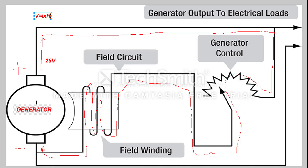If we assume that we have some sort of voltage being produced by the DC generator, that voltage is creating current moving through the variable resistor. A coil's resistance is basically going to be zero because it's just a coil of wire. So let's assume that the variable resistor is set to a resistance of 28 ohms.